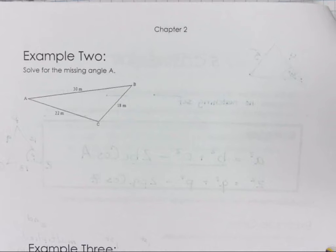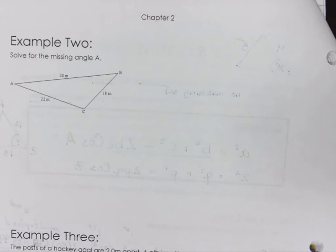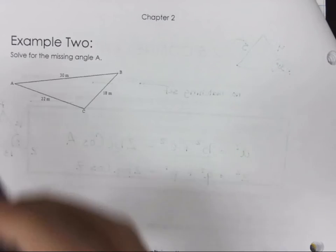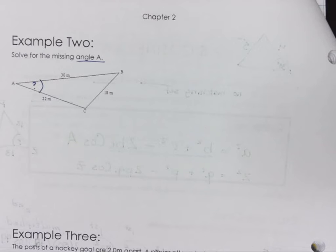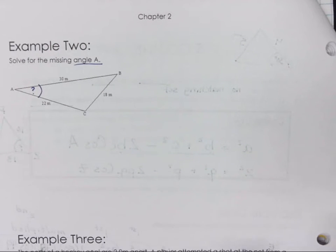We're going to be solving for angle A. I would highly recommend that if it says angle A, go through and actually label it so that you're aware of where you're solving for. If this was the question on the test and you solved for angle B, even if you did it correctly, because you didn't solve for angle A, you lose marks, all of them.